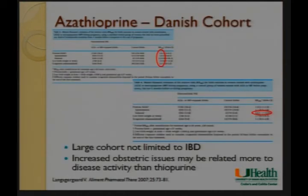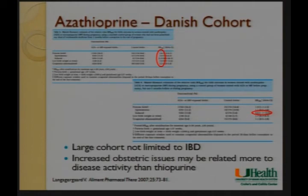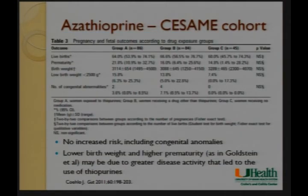A larger Swedish registry of almost 500 patients using azathioprine, mostly for IBD, again showed no increased rate of congenital anomalies compared to those not on thiopurines — a small increased risk of cardiac defects but a very small number — and increased preterm birth and low birth weight likely due to disease effect. This is suggested by a large Danish cohort showing that when comparing azathioprine patients to those who had never received azathioprine there was a significant increased risk, but when comparing to those who had previously received azathioprine in the past but not recently, almost all those numbers went away.